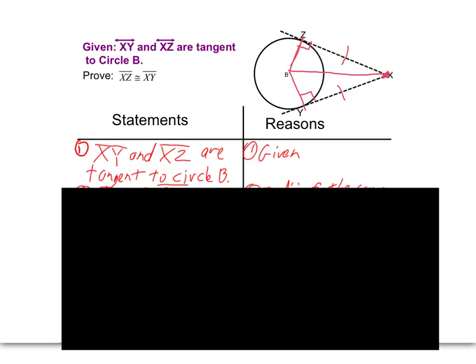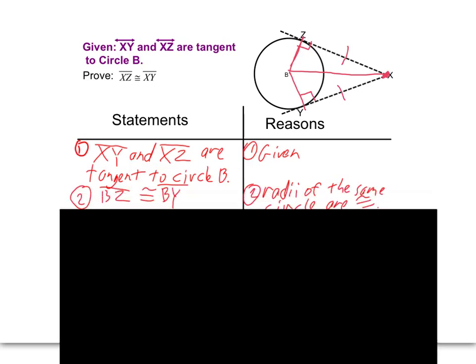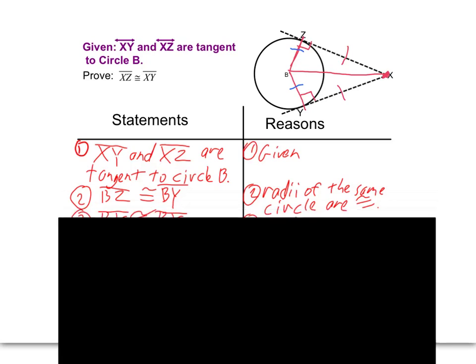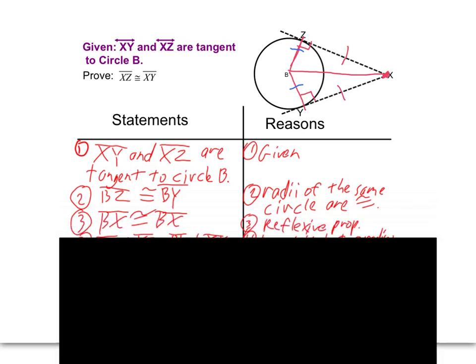First, the given: segments XY and XZ are tangent to circle B. Then, BZ and BY are congruent — they're both radii of the same circle. All radii of a circle are equal, so radii of the same circle are congruent. Number three: BX, the hypotenuse of those two right triangles, is congruent to itself — and that, of course, is the reflexive property.